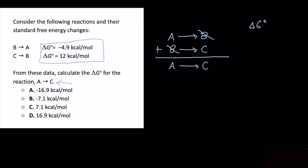Delta G naught will actually be flipped in sign from positive to negative or negative to positive every time we flip the reaction. In this case we flipped both of the reactions, so B is from B to A, we flipped from A to B, so we need to flip that negative to a positive. So previously it was negative 4.9 kcal/mol but now we need a positive 4.9 kcal/mol.